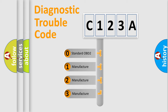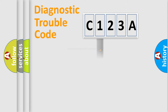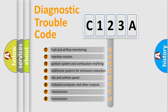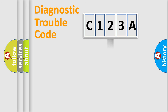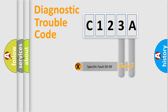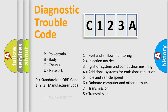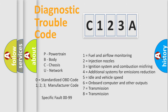If the second character is expressed as zero, it is a standardized error. In the case of numbers 1, 2, or 3, it is a more specific expression of a car-specific error. The third character specifies a subset of errors. This distribution is valid only for the standardized DTC code, and only the last two characters define the specific fault of the group. Such a division is valid only when the second character is expressed by the number zero.